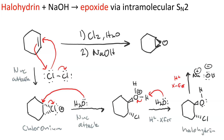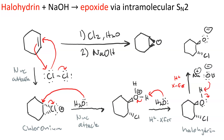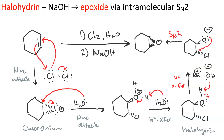We then use sodium hydroxide to deprotonate the halohydrin, and now we have an alkoxide, which is going to do nucleophilic attack on the alpha carbon of the alkyl halide. The curved arrows show nucleophilic attack, the halogen leaves, and we produce our epoxide.